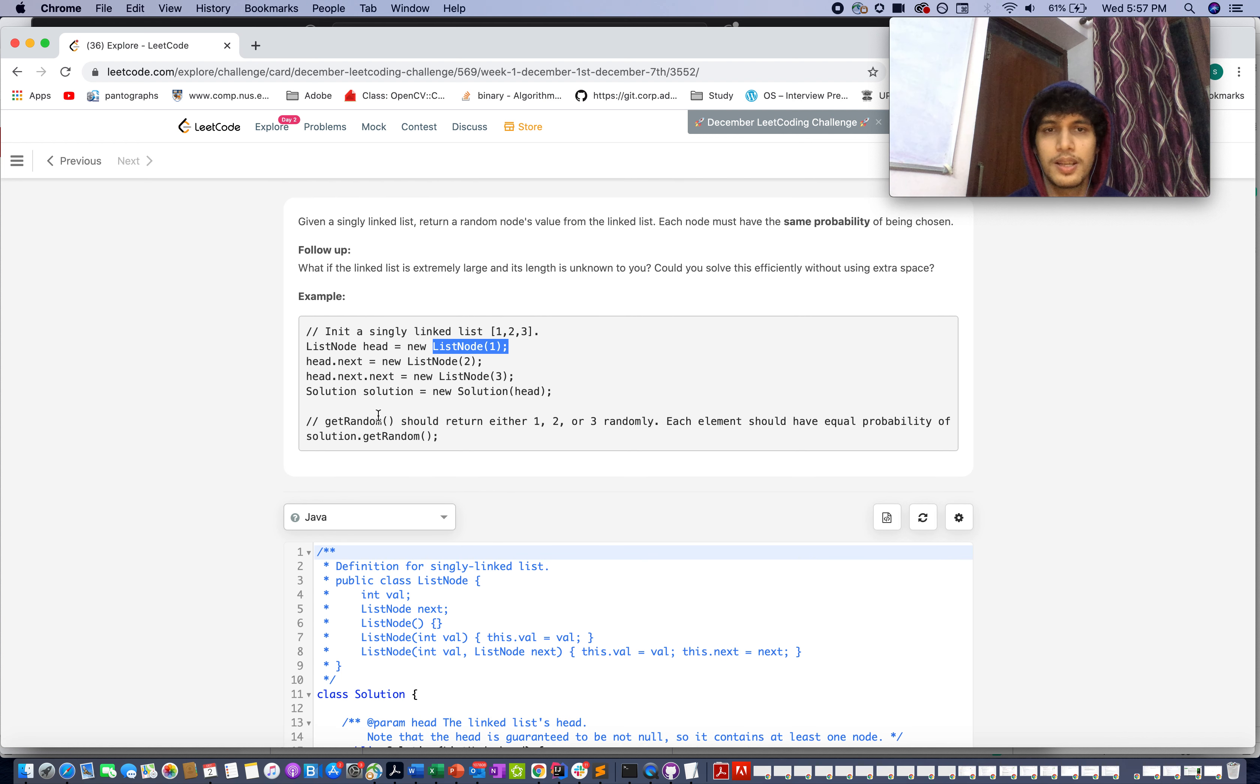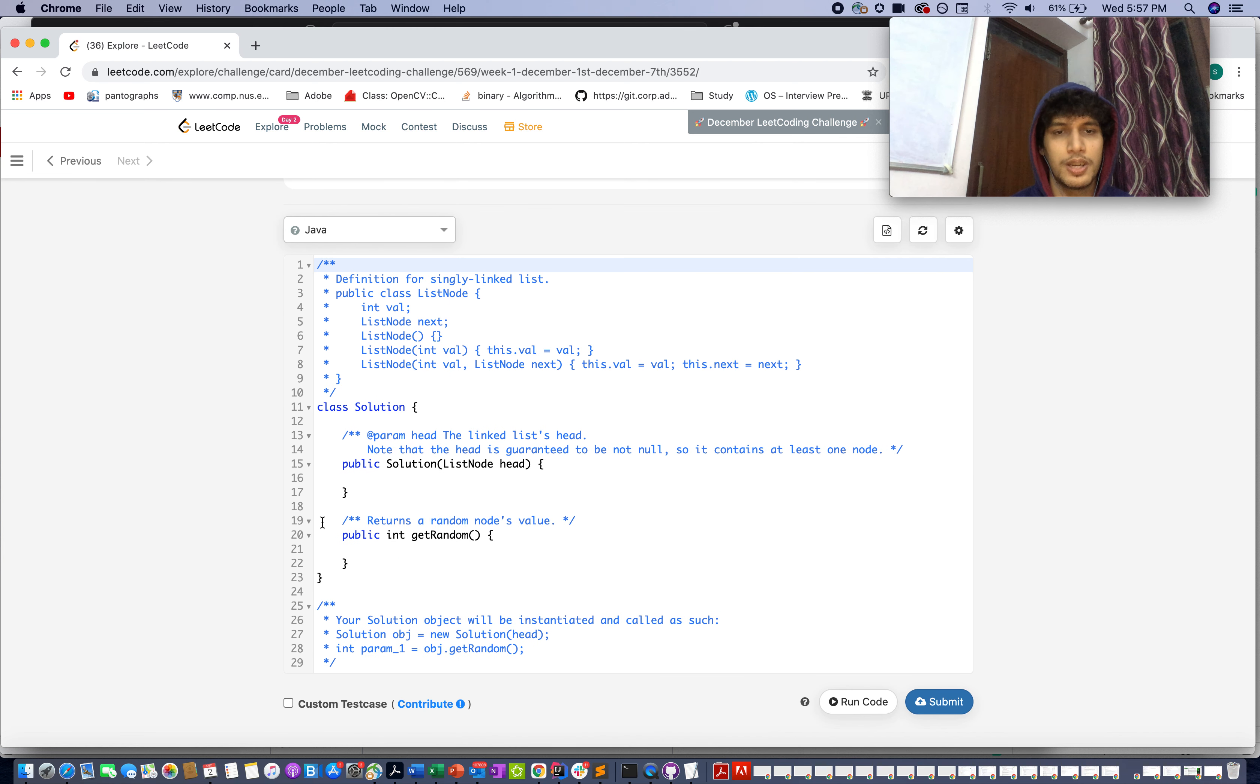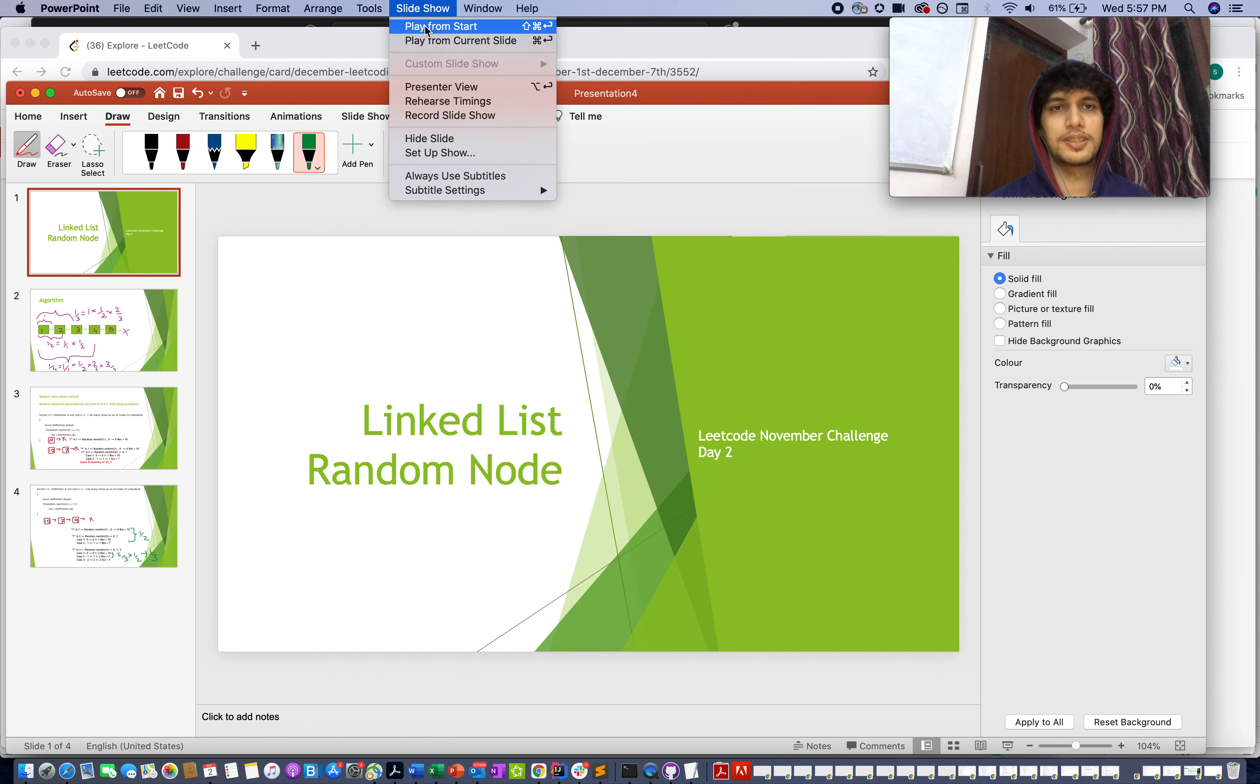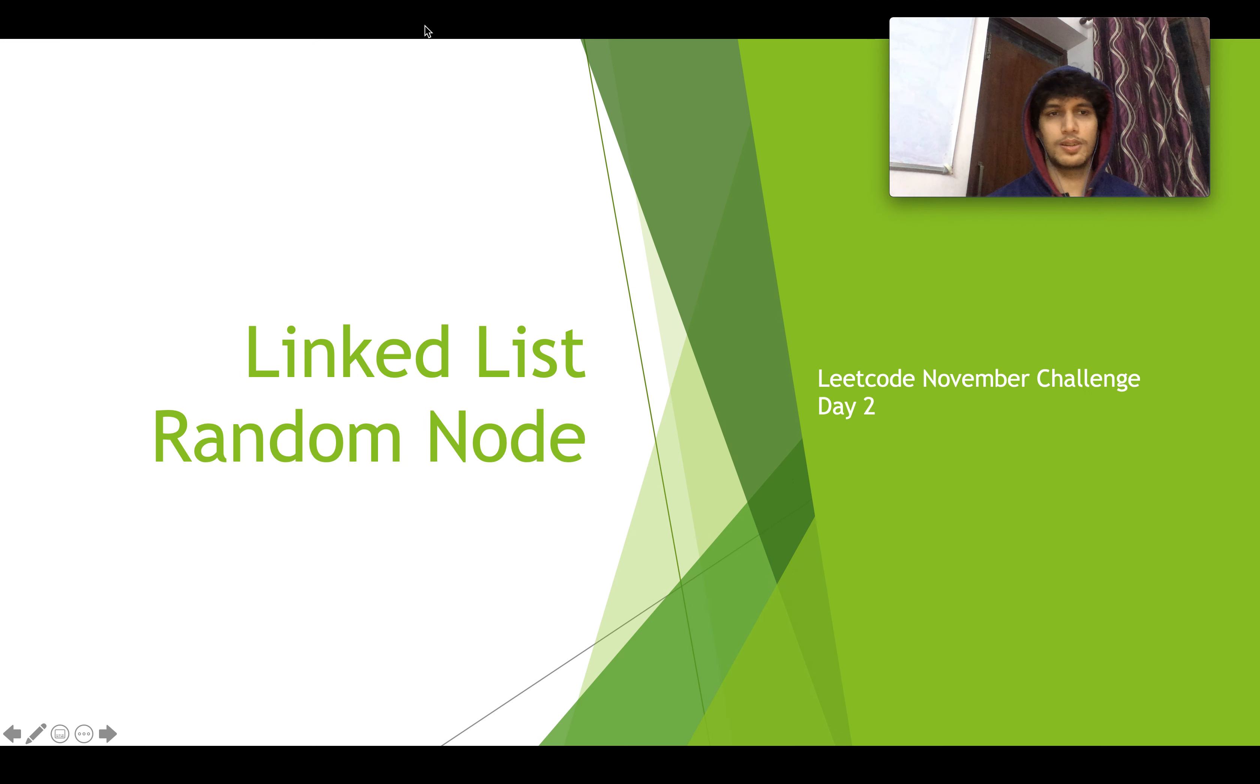In this example you are given 3 nodes: 1, 2, and 3. You need to devise an algorithm such that the probability of choosing 1, 2, or 3 is equal, that means 1 by 3. Get random should return 1, 2, or 3 with equal probability equivalent to 1 by 3. So you need to write the algorithm for this and define the get random method and initialize the solution class. Let's jump on to the algorithm now.